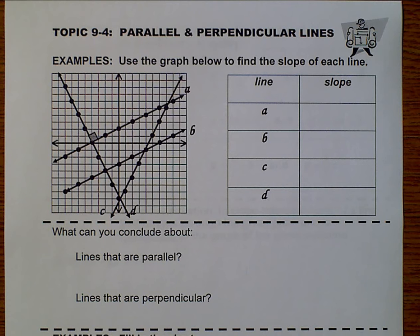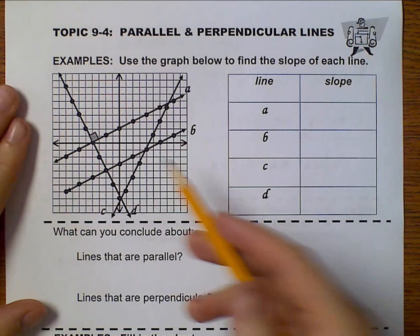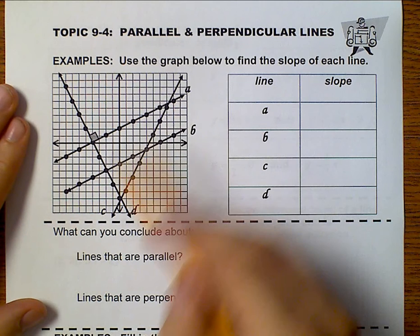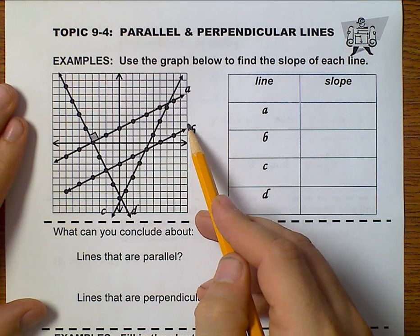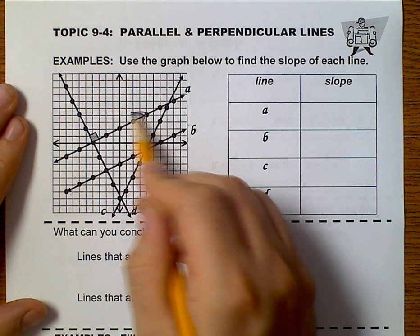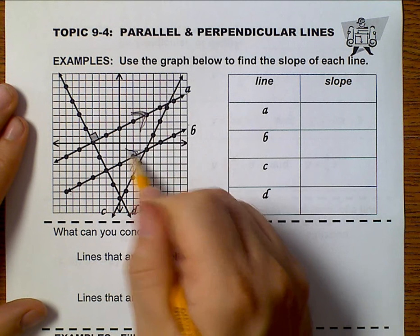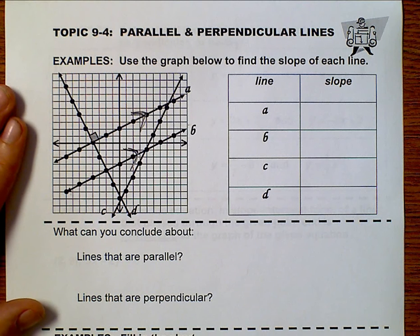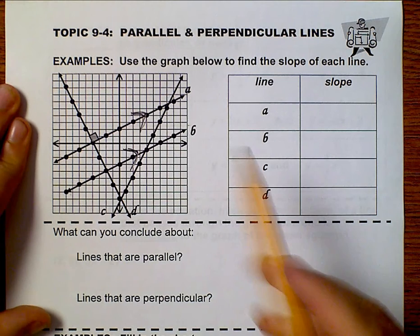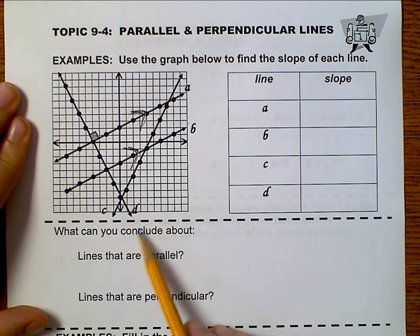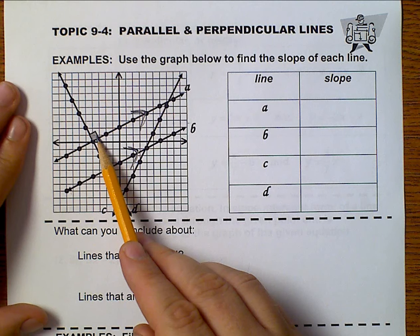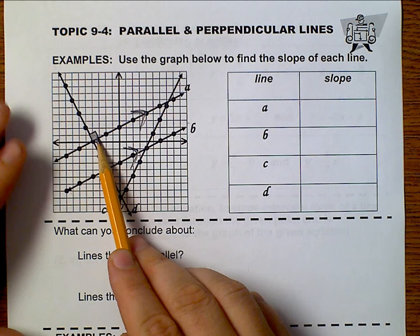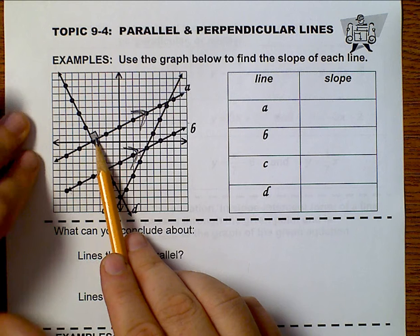First off, we're going to have to talk about what makes lines parallel and perpendicular. So if I'm looking up here, lines A and B, those are parallel. And we mark parallel lines by drawing arrows like that in the middle of the line. And then we know that lines A and D are perpendicular because we are told that this is a right angle. And if it's a right angle, then it's perpendicular lines.